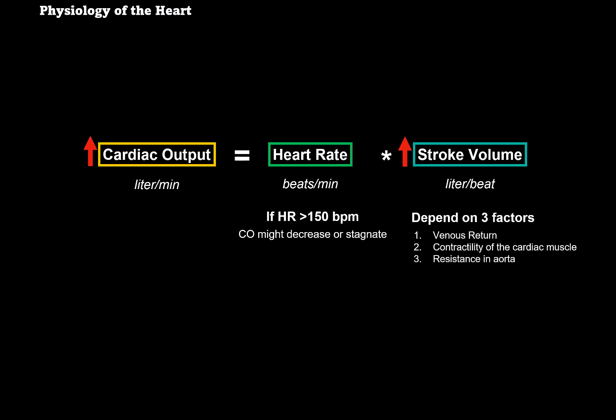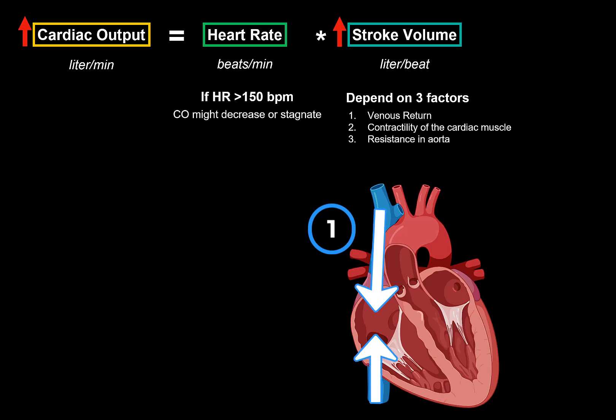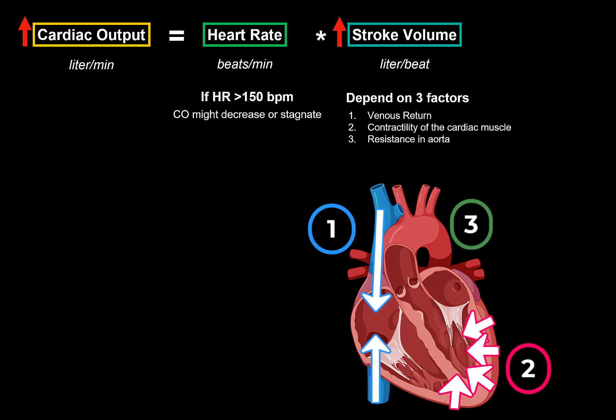Stroke volume depends on three factors. First is venous return: if more blood comes into the heart, more blood can be ejected during the next systole. Second is the contractility of cardiac muscles — the stronger the contraction, the higher the amount of blood pushed into the great arteries, including the reserve volume released during strong contractions. Third is the resistance in the aorta. If a patient has chronic hypertension or high cholesterol with plaque buildup, the aorta stiffens, raising aortic pressure, so less blood can move from the ventricles into the aorta during ejection, reducing stroke volume.